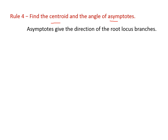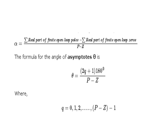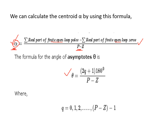The fourth rule is to find the centroid and angle of asymptotes. Asymptotes give the direction of root locus branches, and their intersection point is the centroid. The number of asymptotes equals P minus Z. The centroid, denoted sigma, equals the summation of real parts of finite open loop poles minus the summation of real parts of finite open loop zeros, divided by P minus Z.